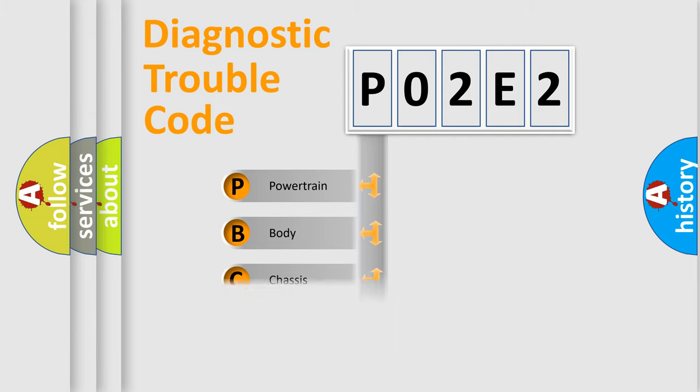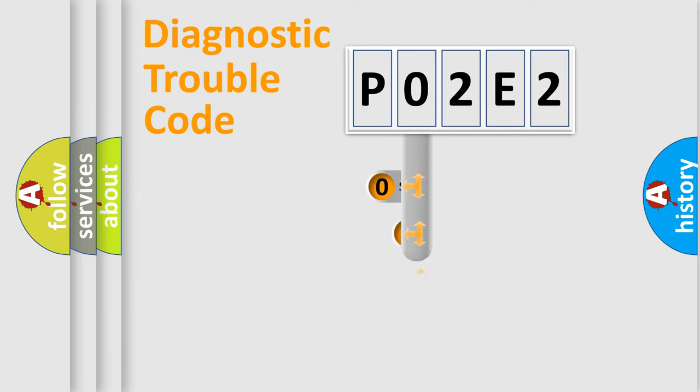Powertrain, body, chassis, and network. This distribution is defined in the first character code.